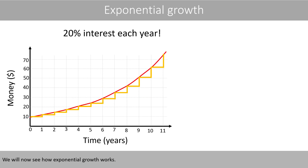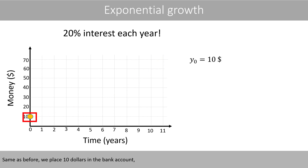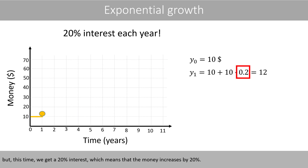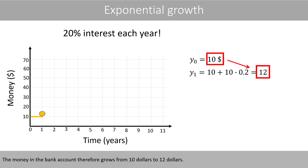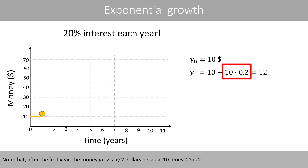We'll now see how exponential growth works. Same as before, we place $10 in the bank account. We wait one year, but this time we get 20% interest, which means that the money increases by 20%. The money in the bank account therefore grows from $10 to $12. Note that after the first year, the money grows by $2, because 10 times 0.2 is 2.